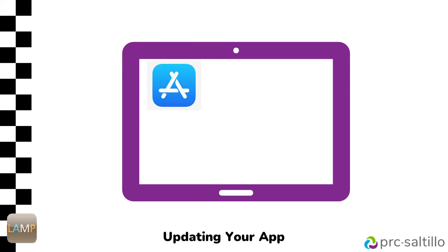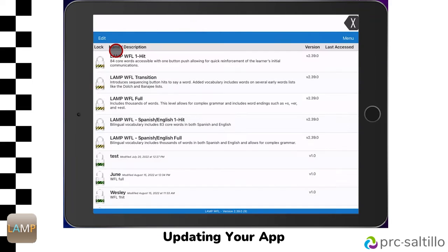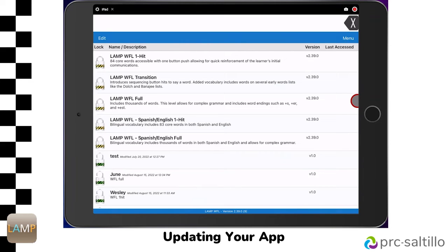Keeping your Lamp Words for Life app up to date will assure optimal performance and add new features and settings when they are released. PRC Saltillo announces new updates on the website blog, in email newsletters, and on social media platforms. To check on what version you are running, go to Vocab, then Choose New Vocab. At the bottom of your screen, you will see the version of your Lamp Words for Life app. To update the app, you will need to go to the App Store on your iPad. Exit your Lamp Words for Life app.